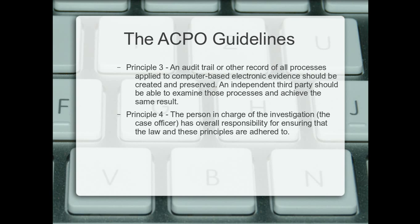Principle three: an audit trail or other record of all processes applied to computer-based electronic evidence should be created and preserved. An independent third party should be able to examine those processes and achieve the same results. Basically that means note everything you do — produce reports on everything you do during your examination, so that if another party comes along, they can take your reports, your notes, and the original evidence and produce exactly the same results as you. If they can't, people are going to want to know why. Make sure that you keep that audit trail, save your notes somewhere secure, and keep a copy because things happen and things get lost.